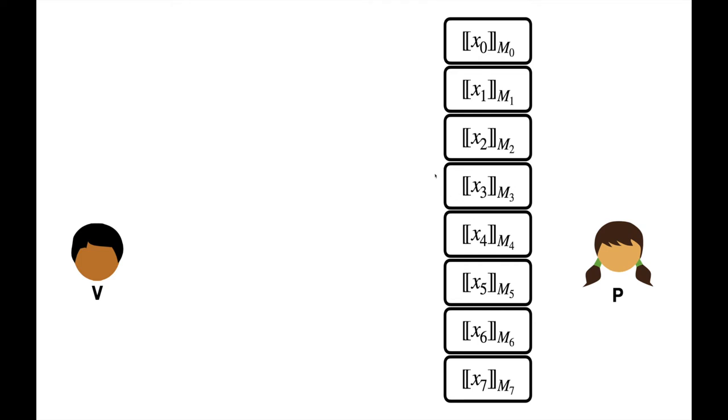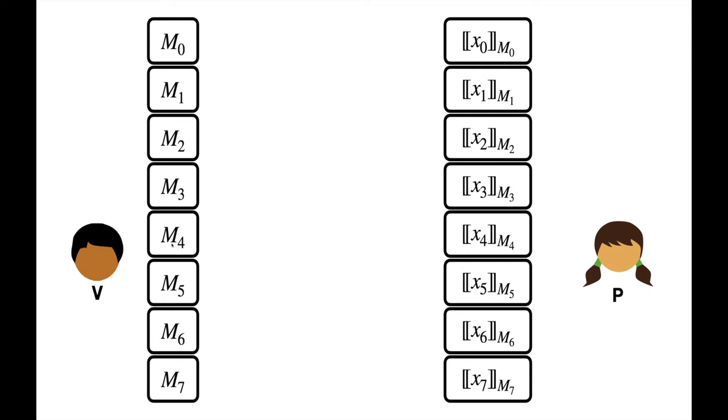However, the problem is that in doing so, she retrieves a share with the particular mask M3. We need the output of the RAM to be a valid authenticated sharing. But to form a valid sharing, both parties must agree on the specific mask M3. But V cannot know the specific mask M3. Otherwise, he would learn the access index and the RAM would not be oblivious. However, V does know all such masks M3.